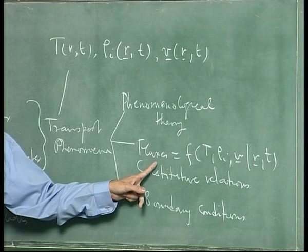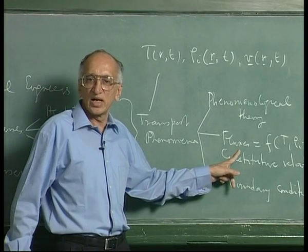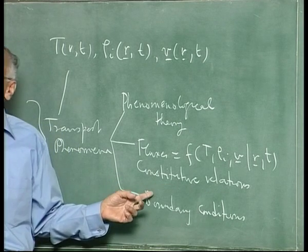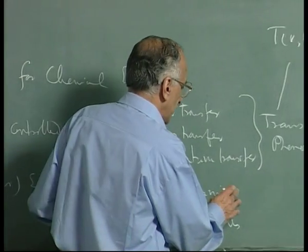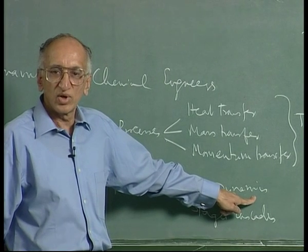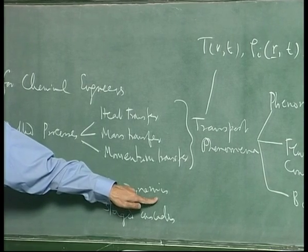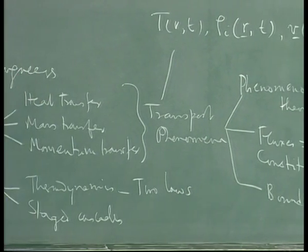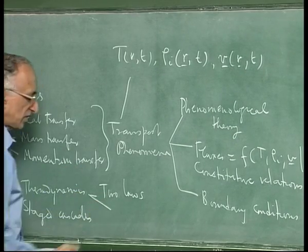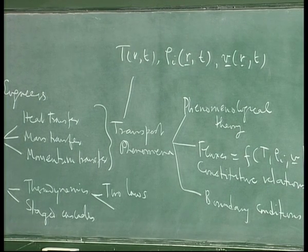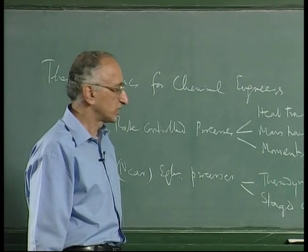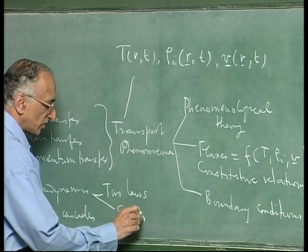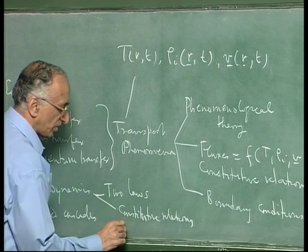The flux itself is empirical. If you write Newton's law saying the shear stress is minus μ times the gradient of velocity, you are writing an equation observed from experiment. All constitutive relations come from experiment, although in continuum mechanics they tell you what the structure is. Thermodynamics itself has a constitutive relation called the equation of state. In thermodynamics you have the two laws, which are the equivalent of the phenomenological theory, plus constitutive relations — though here they are called equations of state.